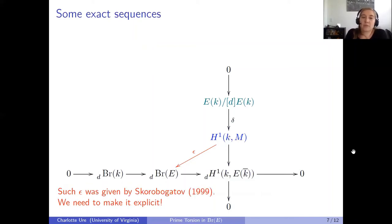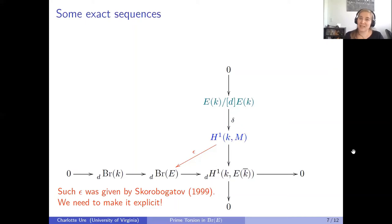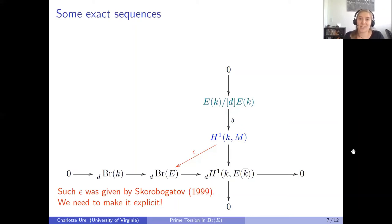Such a map ε was already described in theory by Skorobogatov. The hard part is to make it explicit, because the map is given as an étale cup product, and étale cup products are generally not very explicit by their definition. Making étale cup products into concrete, hands-on explicit maps is a very difficult problem.